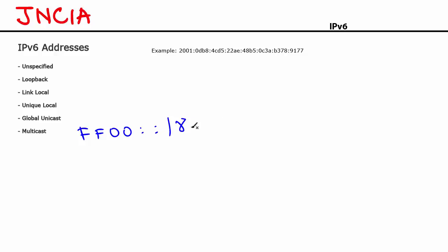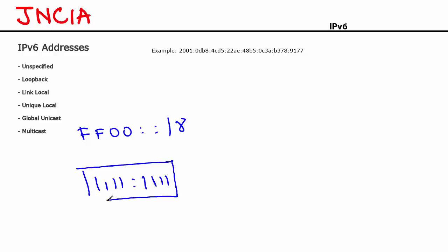The /8 means the first 8 bits of the multicast address have to be fixed. Converting F into binary gives 1111, and the second F also gives 1111 — that's 8 bits, which should be the first 8 bits of a multicast address. So these are the different addresses in IPv6.